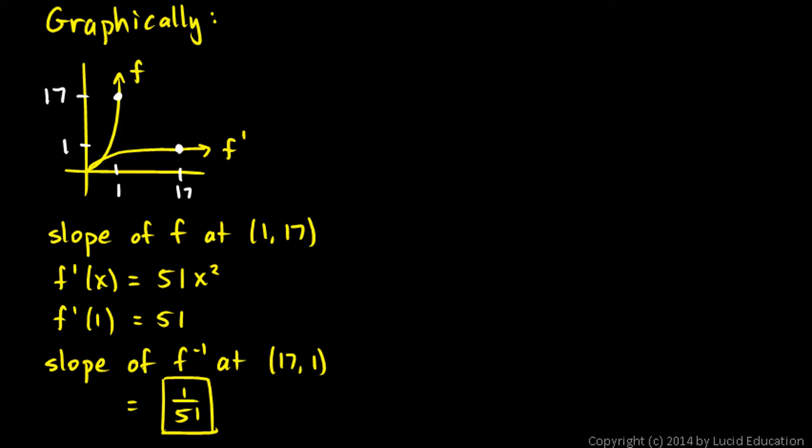Okay, now let's do the same problem algebraically. So here's the algebraic solution. We know that y is 17x cubed. That was our original function, f of x is 17x cubed. But we write it with this notation instead of the f notation. And then we switch the x and y. So we say x is 17y cubed. And then we solve this for y.